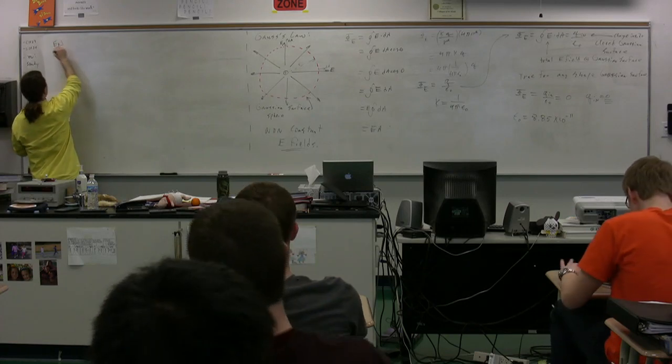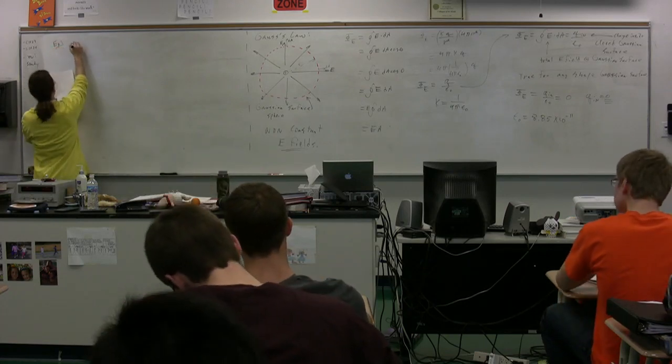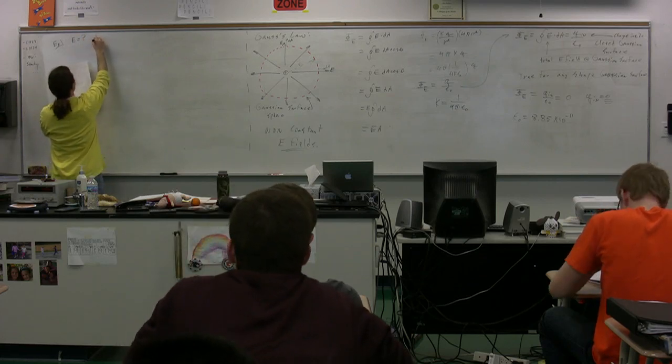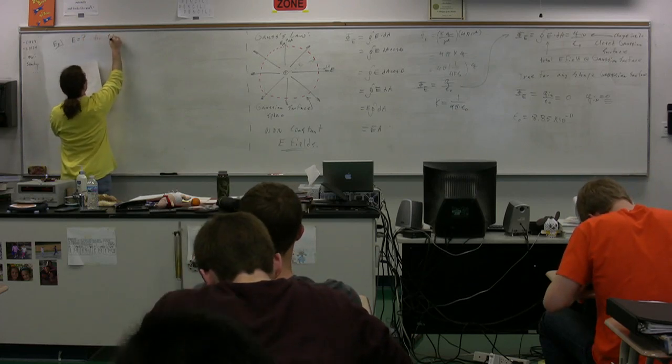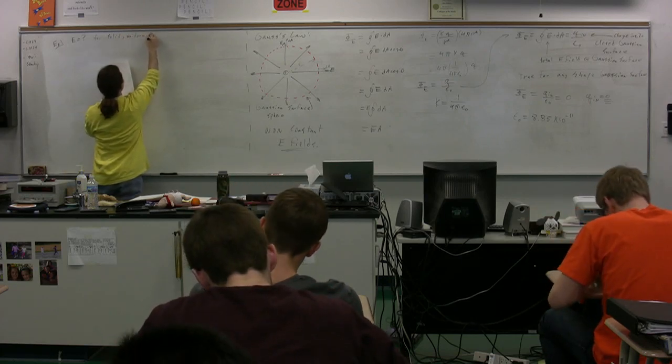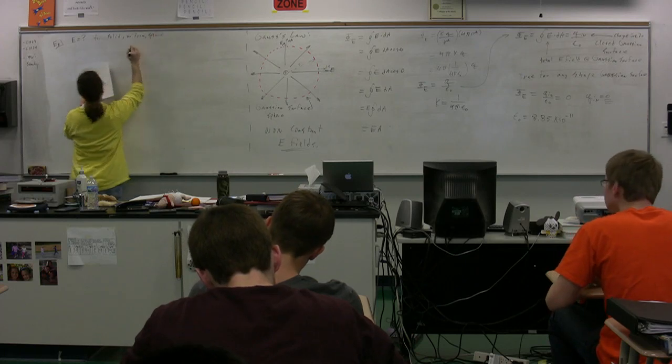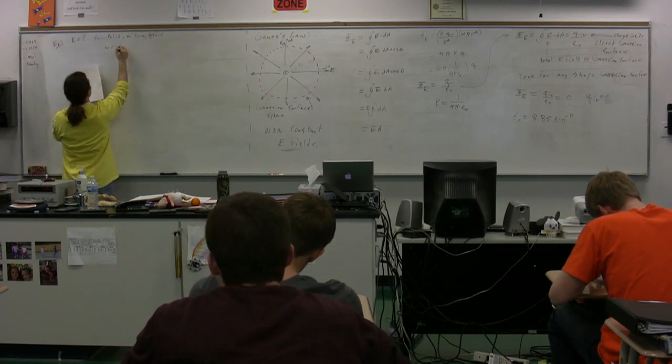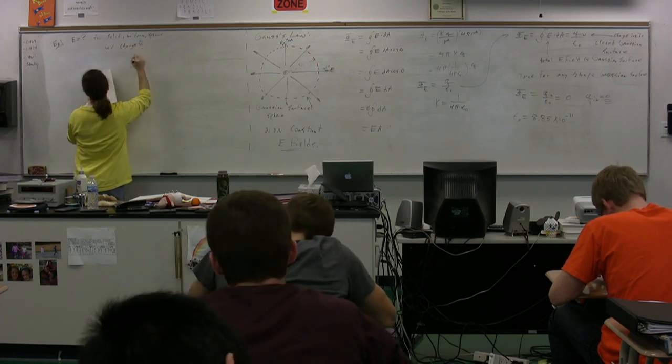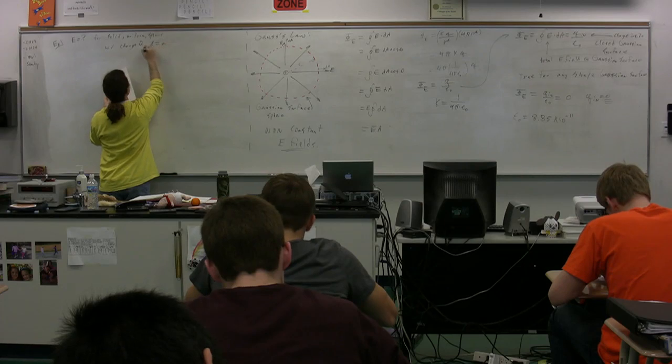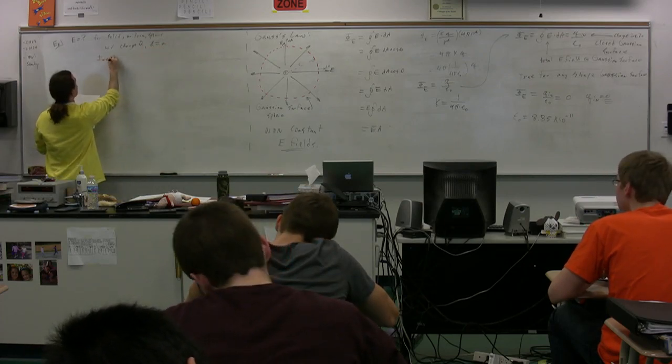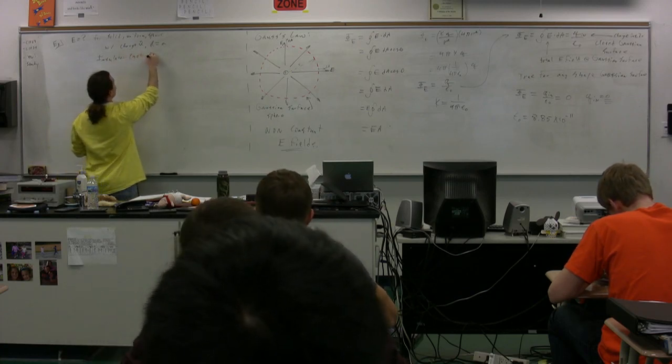So, in this example, we are going to figure out the electric field that exists around and inside a solid, uniform sphere with a charge big Q, a radius R, which is equal to little a, and it is an insulator, which is not a conductor.